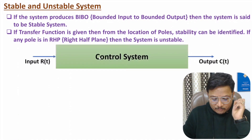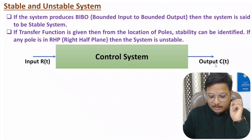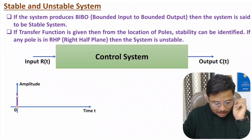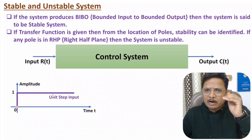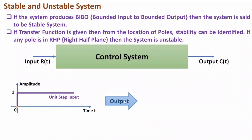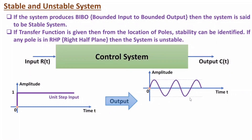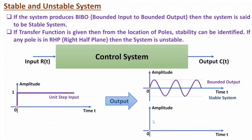Here we have one system with input R(t) and output C(t). Giving a unit step input: if the output is a sinusoidal waveform, the output is bounded — this is an example of a stable system. If the output appears like a ramp signal, then with respect to time, the output increases unboundedly — this is a classic example of an unstable system.